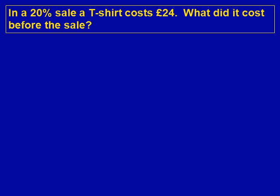If we look at the question and try to understand it, the sale of 20% has already happened. 20% has been taken off the price and the answer is £24. Therefore we're left with 80%, because 100% take away 20% leaves us with 80%.